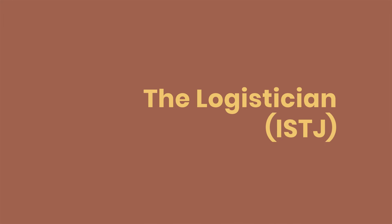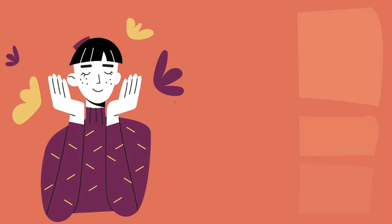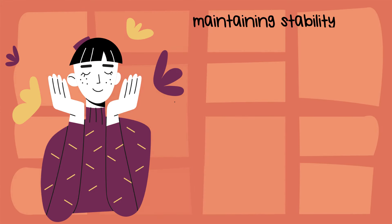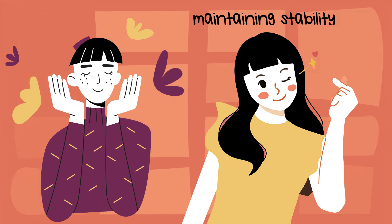The Logistician ISTJ. They value the past for its lessons in structure and order. Nostalgia becomes a guide for maintaining stability and consistency in their lives, ensuring that traditions are honored and respected.